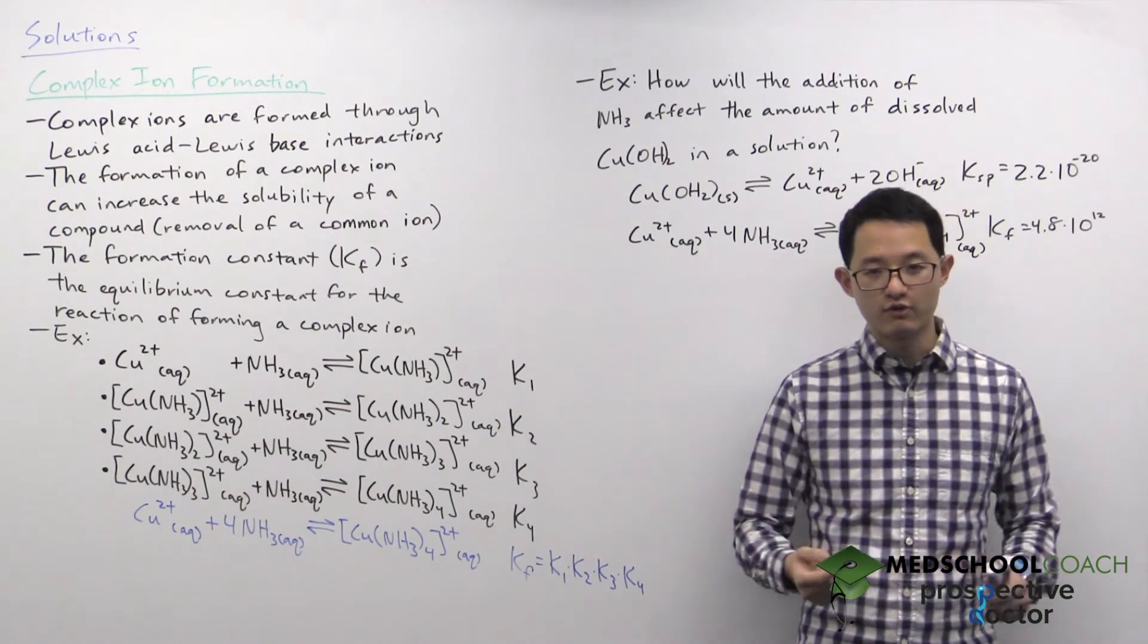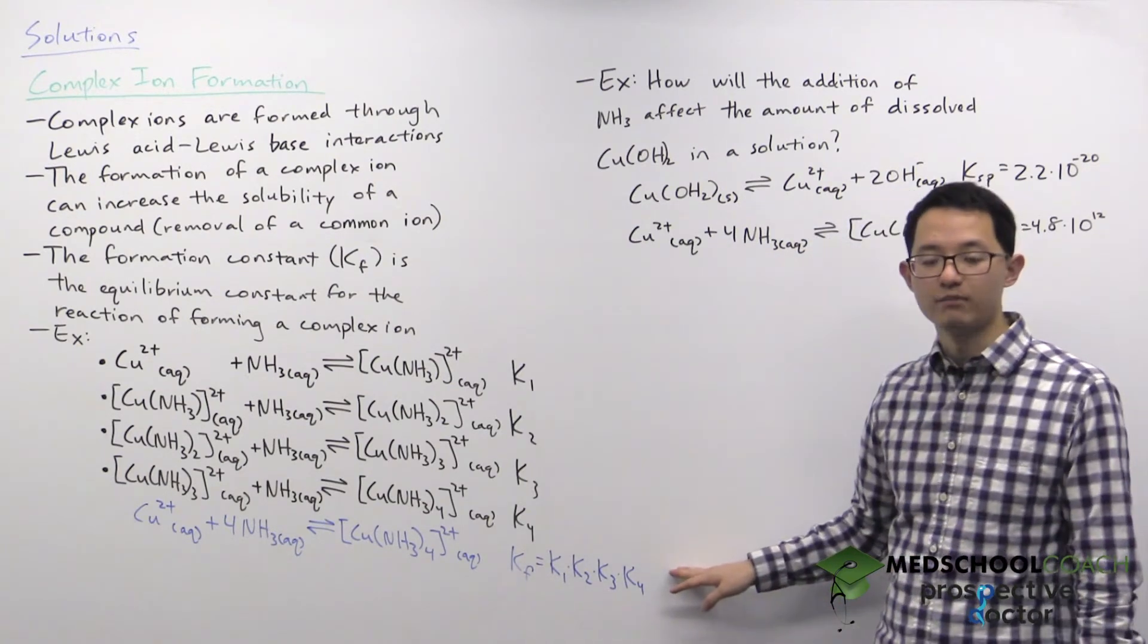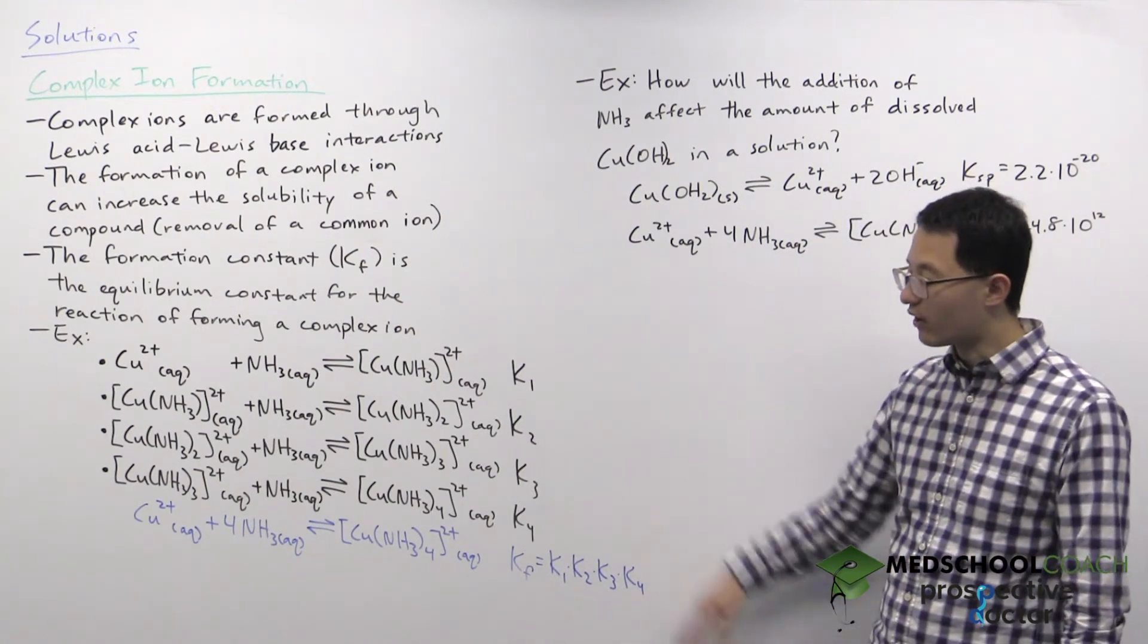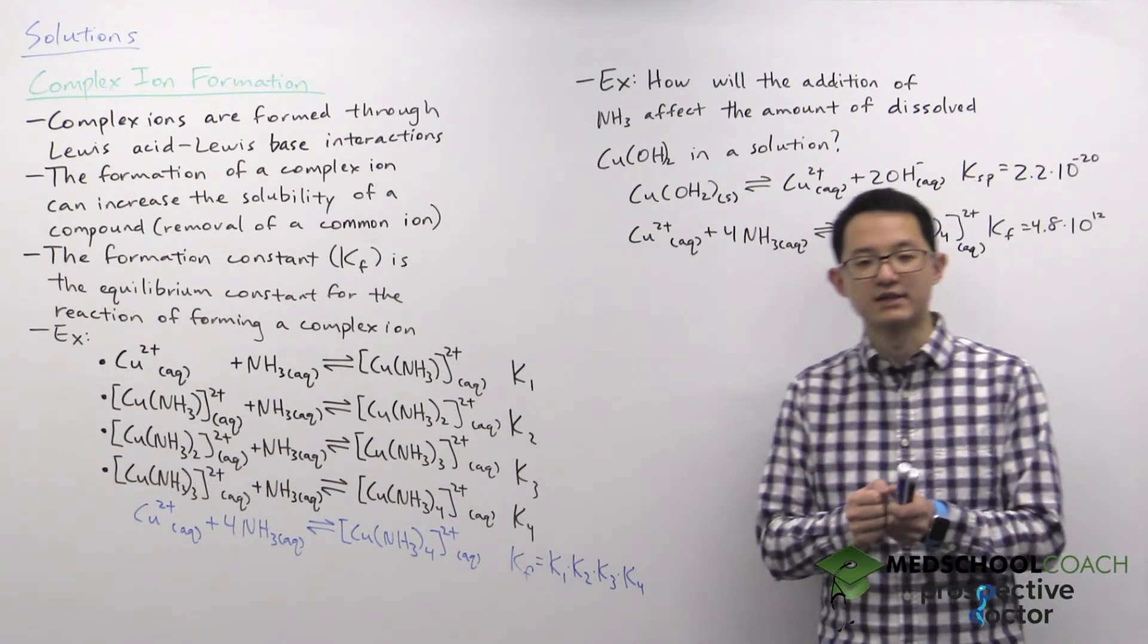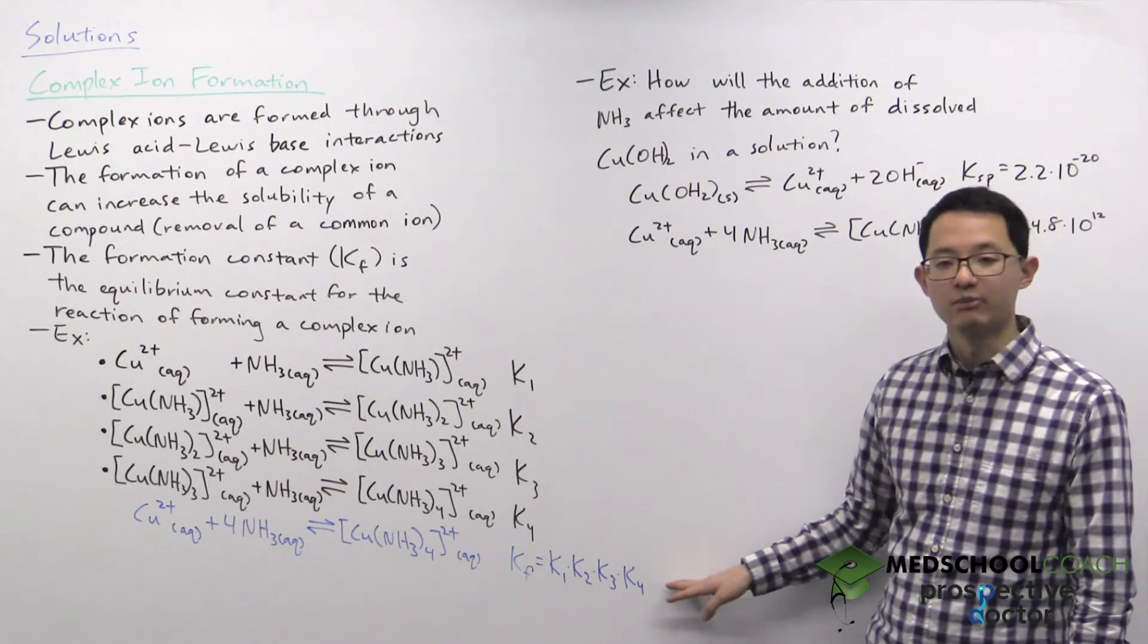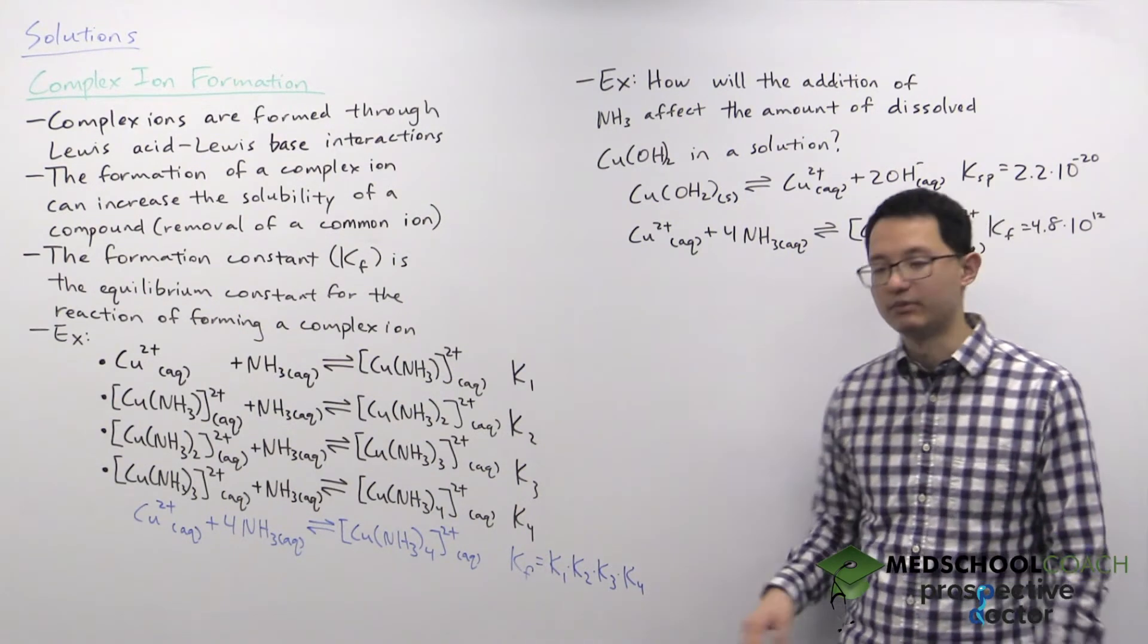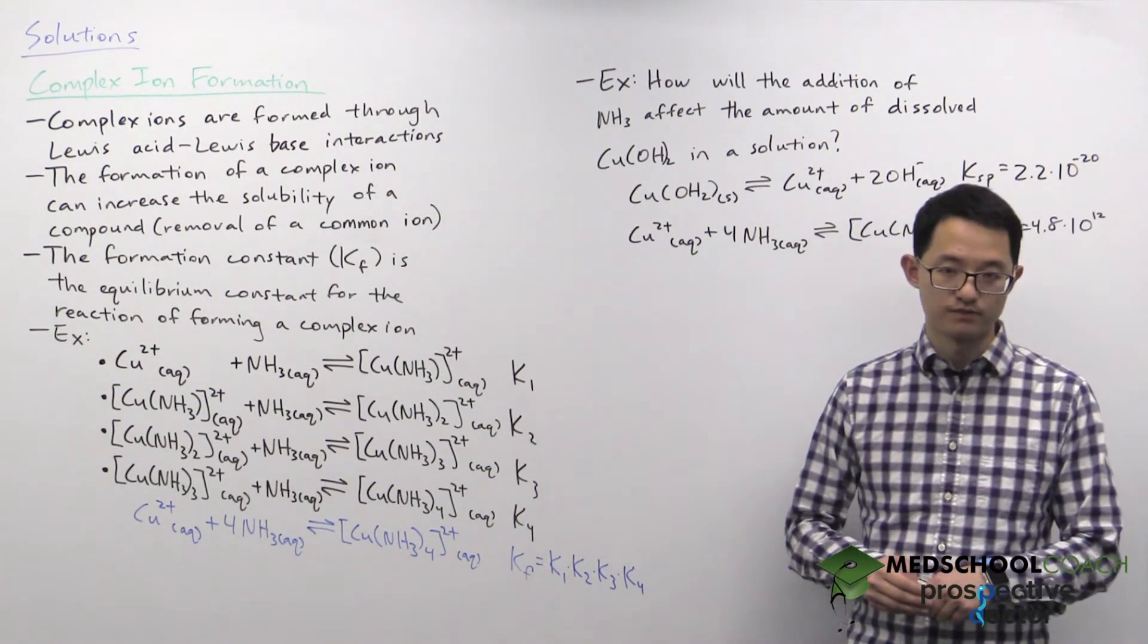And I also want to mention that this isn't just for complex ion formation, this is for all reactions. So anytime you are adding reactions together you can simply multiply their equilibrium constants to get the equilibrium constant for the overall reaction.